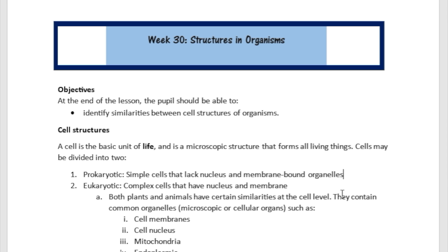An organelle is going to be an organ at a microscopic and cellular level. But then the eukaryotic cells are going to be complex cells that have nucleus and membranes to them. And both cells, both plants and animals are in this category.